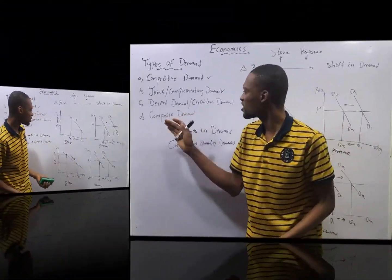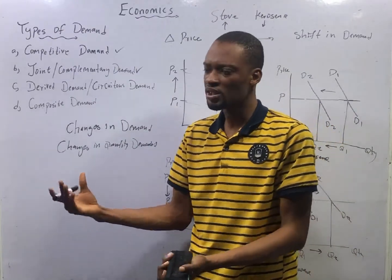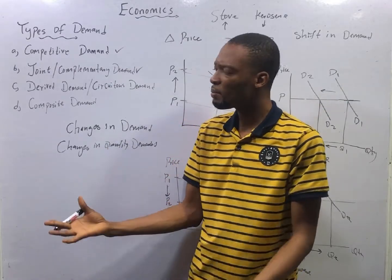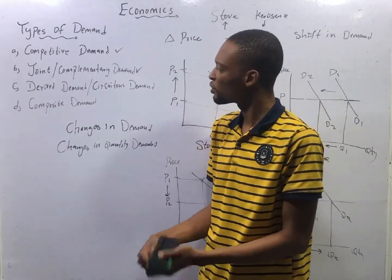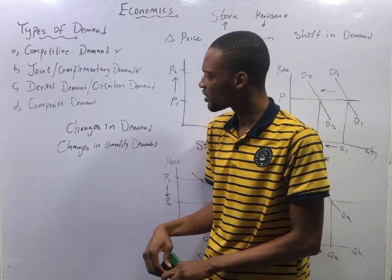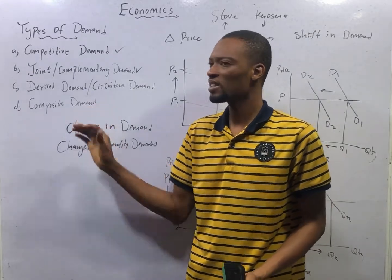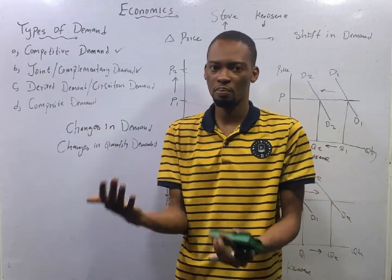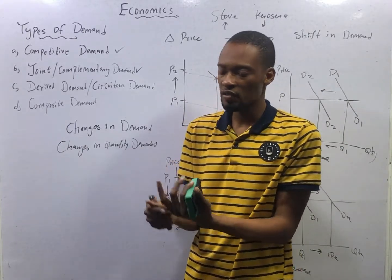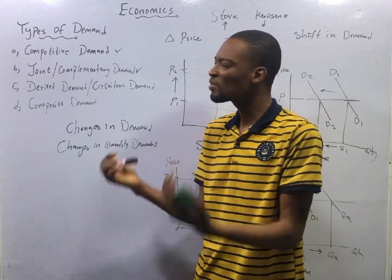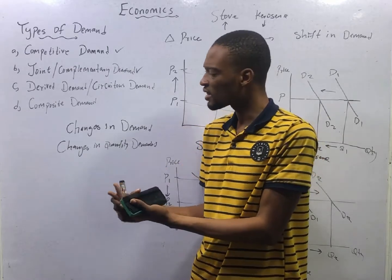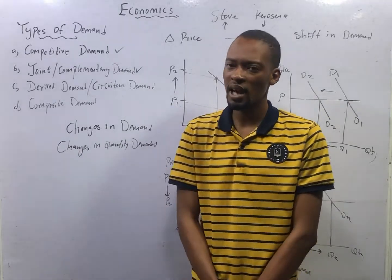Derived demand is the demand for goods or commodities not for direct consumption but for further production — for example, labor, which is a factor of production. The demand for factors of production falls under derived demand or circuitous demand. Composite demand is the demand for goods that serve more than one purpose — for example, corn used for animal feed, for ethanol, for food; or steel used to make car parts, utensils, and many other products.